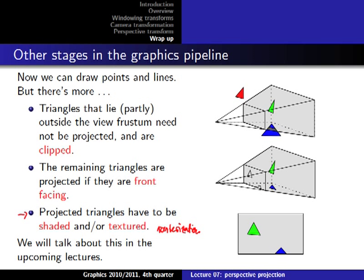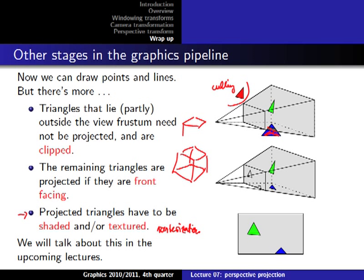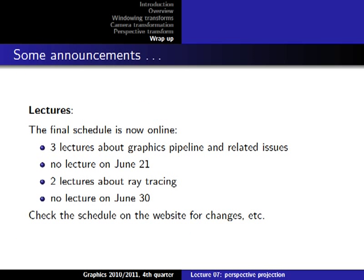Rasterization will be covered in the next lecture. We also assumed all triangles are within the view frustum, but we haven't dealt with triangles outside or partially inside — drawing only the inside portion is called clipping, and discarding fully outside triangles is called culling. Additionally, so far we only had wireframe models; for solid objects we don't want to draw hidden back surfaces. This is called hidden surface removal, and these topics will also be discussed in the next lecture.